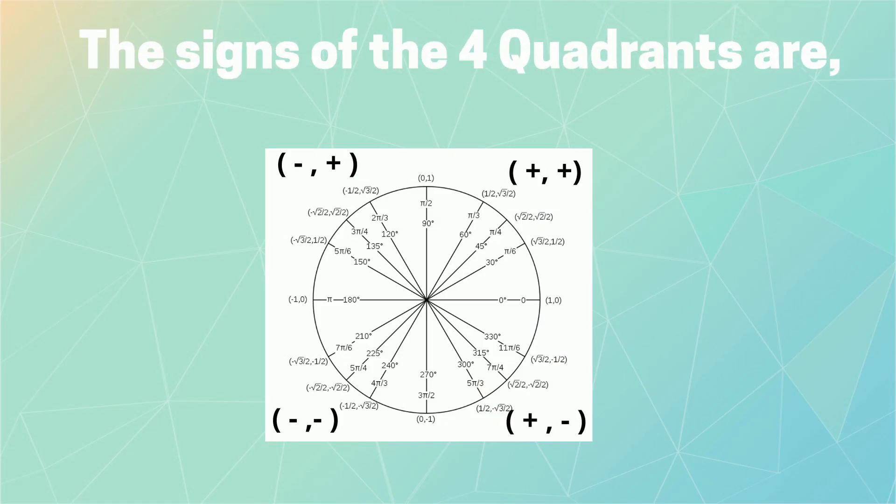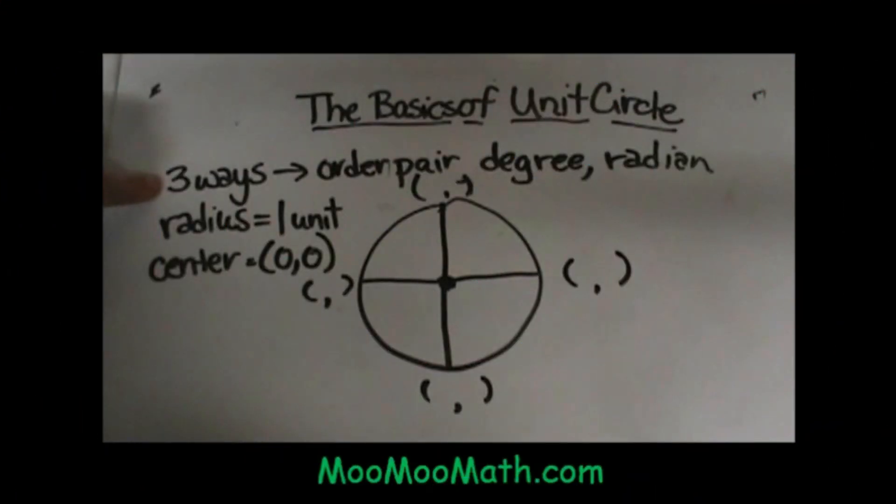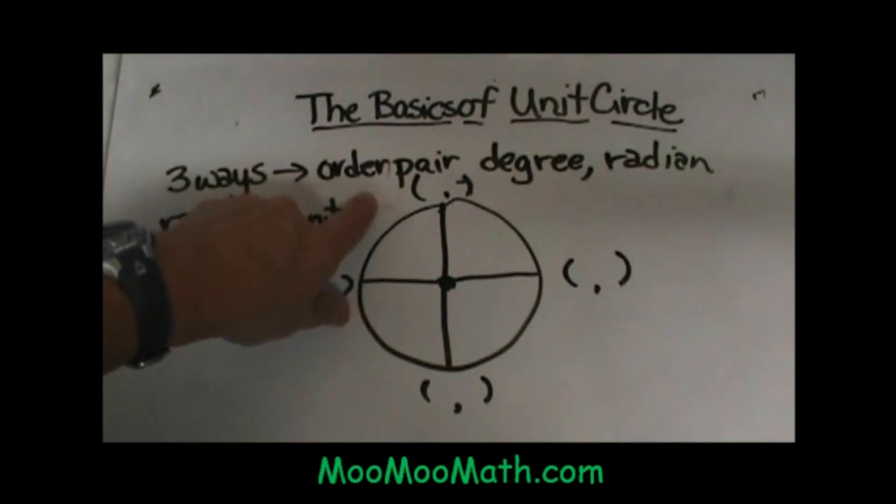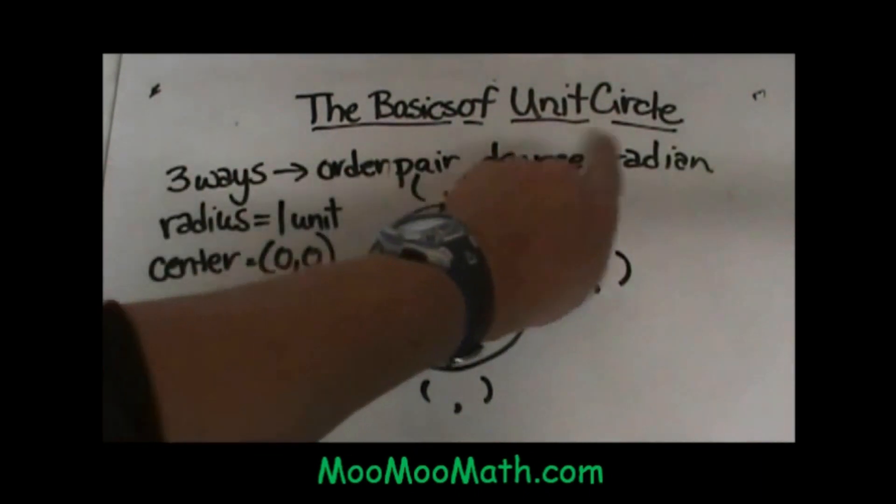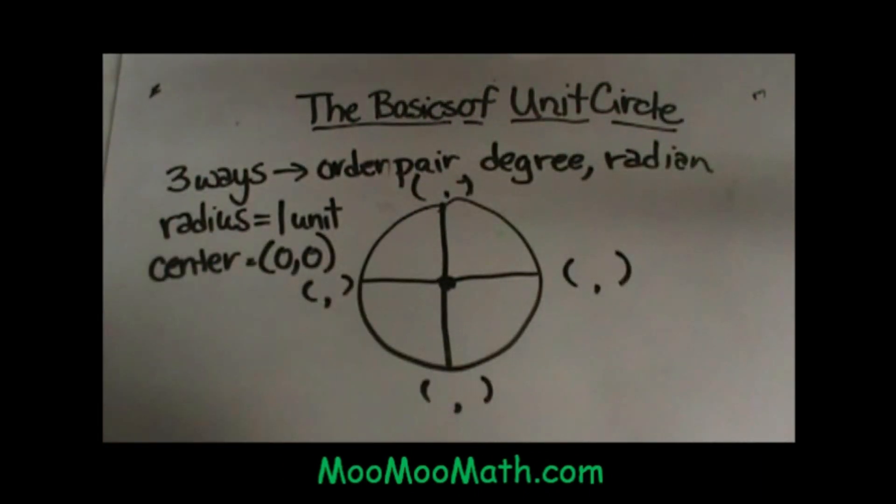Let's get started. When you're working with a unit circle, there are three ways to name points on that circle. That can be as an ordered pair, in degrees, or in radians. We're going to have videos on all of these.